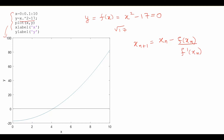Obviously, what you need for starting the Newton-Raphson method is an initial approximation x₀. Then only you can put the initial approximation and start the iteration. It is very important to note that the Newton-Raphson formula converges provided that x₀ is sufficiently close to the root of the equation.